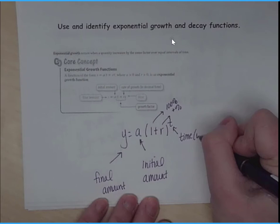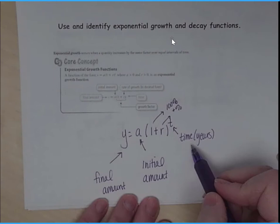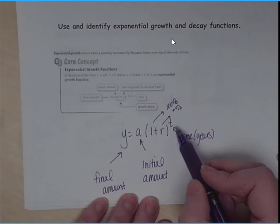And our t, very important, don't forget about this one. It's time, but more specifically it is in years. So if we had six months it would be half a year, two months would be two twelfths, which is one sixth of the year. So we really have to watch our time.